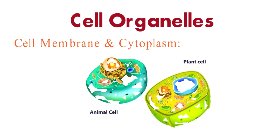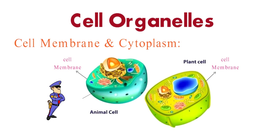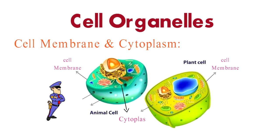The cell membrane is like the cell's gatekeeper. It surrounds the cell and controls the movement of substances in and out, maintaining a stable internal environment. Inside the cell membrane, we have the cytoplasm, a jelly-like substance that supports the organelles and facilitates their interactions.